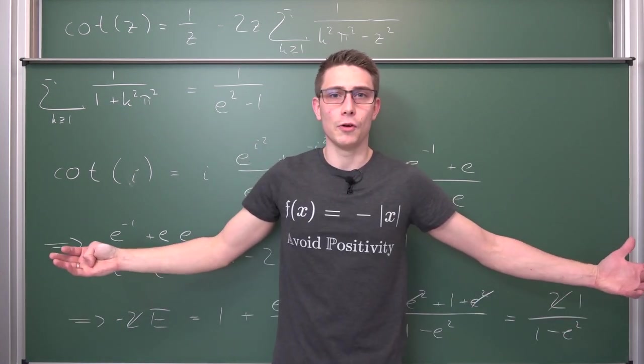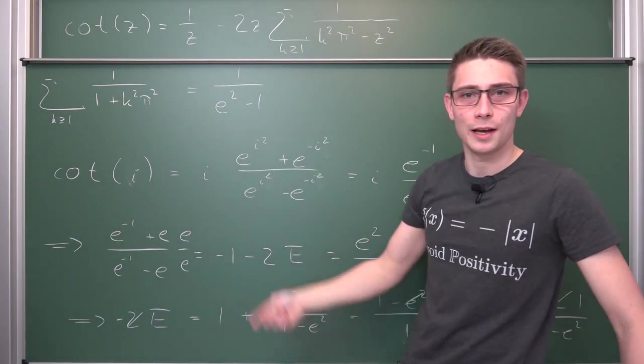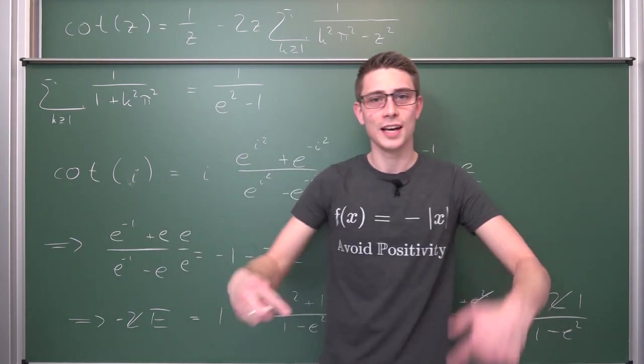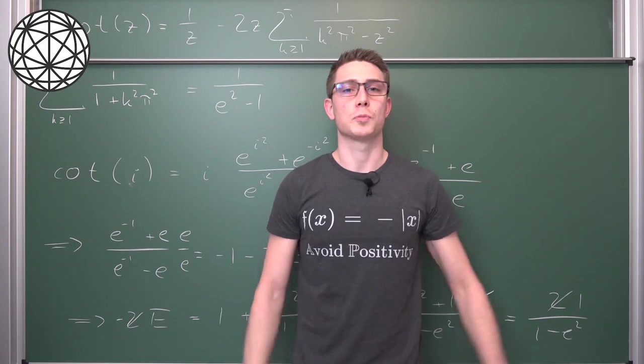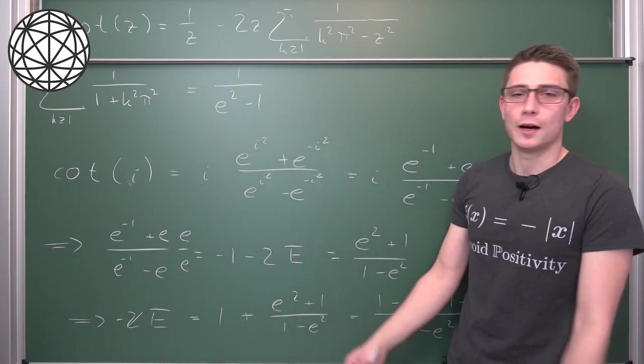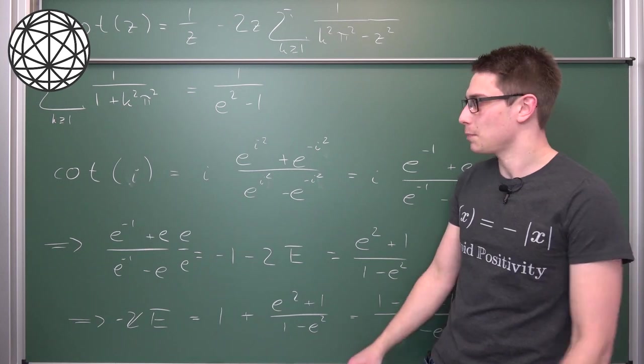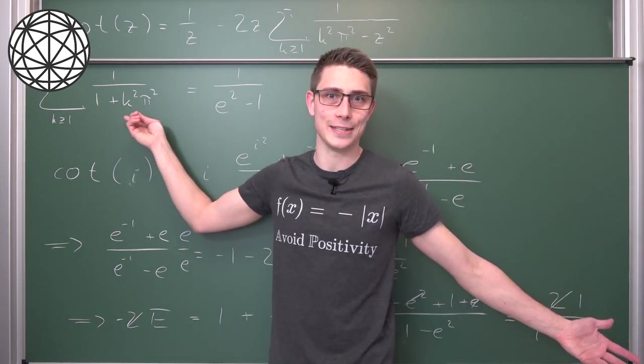But before we end the video, I would like to thank Dylan Burger for providing me with this problem here. You can find a link to his Twitter page in the description and also I would like to thank brilliant.org for sponsoring this episode of some fun little analytic number theory application stuff where we turn π's into e's.